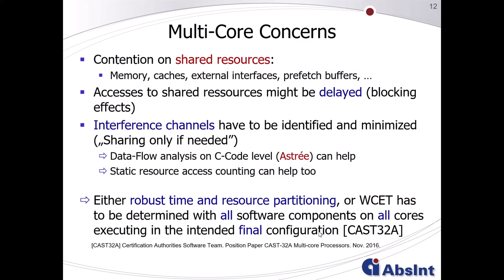It is absolutely mandatory to avoid contention on shared resources like memories or caches, since accesses to shared resources might be delayed. Experts propose that all interference channels have to be identified and minimized — sharing should be used only if really needed. Static analysis solutions like data flow analysis on C code level in Astrae can help identify interference channels, or static resource access counting in AIT can help minimize them.